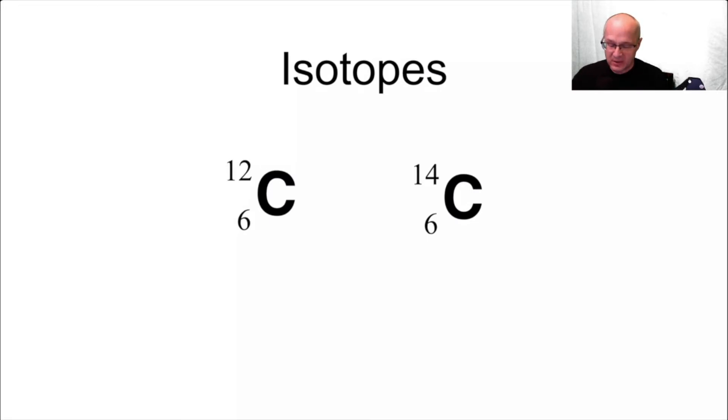The next thing: isotopes. Isotopes are atoms that have the same atomic number. So here we have carbon. They both have the atomic number six, so these are the same element. Now notice they have different numbers here. These numbers are mass numbers. Now mass numbers are not to be confused with atomic mass. It's not the same thing.